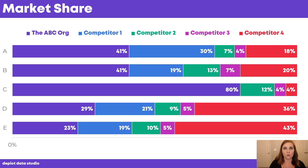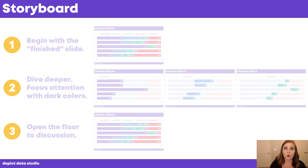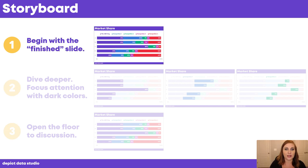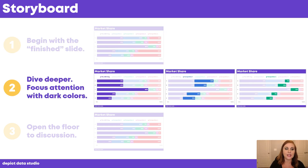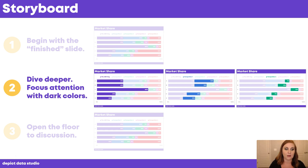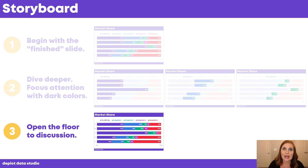But let's take this a step further — we're not done yet. Let's talk about storyboarding for a slideshow or live presentation. Storyboarding means presenting your slides one at a time, in steps or stages — first, second, and third. First, begin with the finished decluttered slide. Second, dive deeper and focus attention with dark colors — your audience's eyes will follow the dark colors instantly without even thinking about it. Third, show that completed slide again and open the floor to discussion, letting people look at the finished product a bit more.